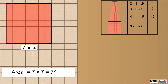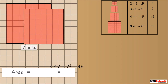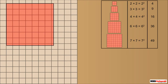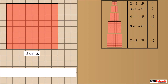The area of the square of side 7 units is written as 7 squared, which is equal to 49. Consider a square of side 8 units. It is further divided into 64 unit blocks. The area of this square is 8 into 8, which we write as 8 squared, which is equal to 64.